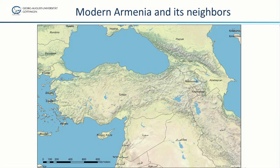This map shows the modern Republic of Armenia and its neighbors. Armenia is right here, with its capital Yerevan, Turkey to its west, Azerbaijan to the east, Georgia to the north.